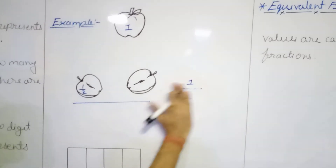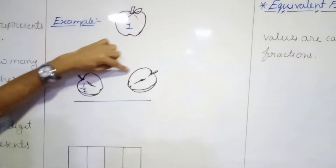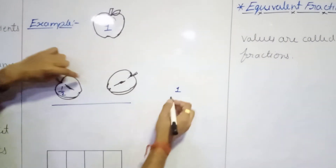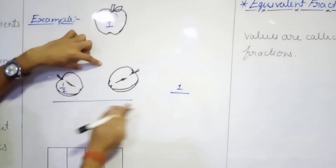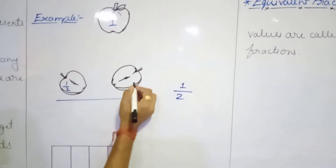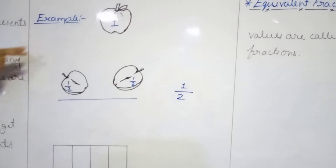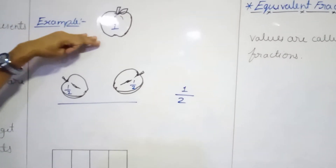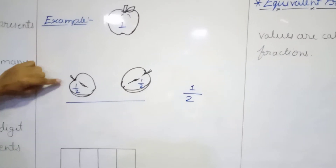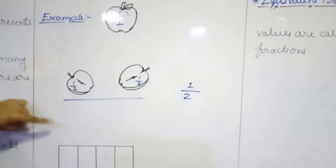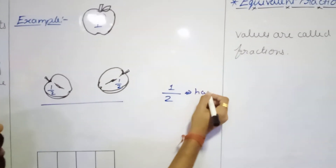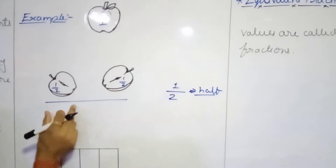Now let's think about the second piece. It is also a piece of apple and it is also considered out of these 2. The whole is 2, so we can say it is also 1 upon 2. Whenever we have an apple and we divide it into 2 parts, it will be considered 1 upon 2 - means half. In our general language, we are saying that is the half - half of an apple.